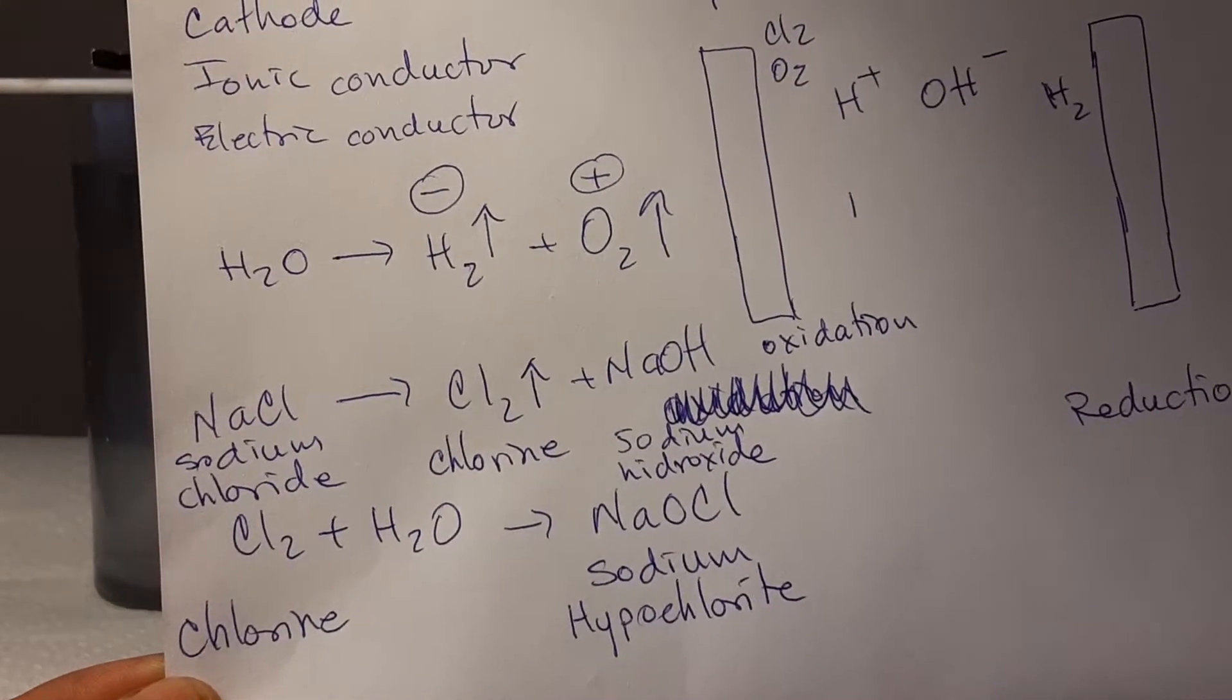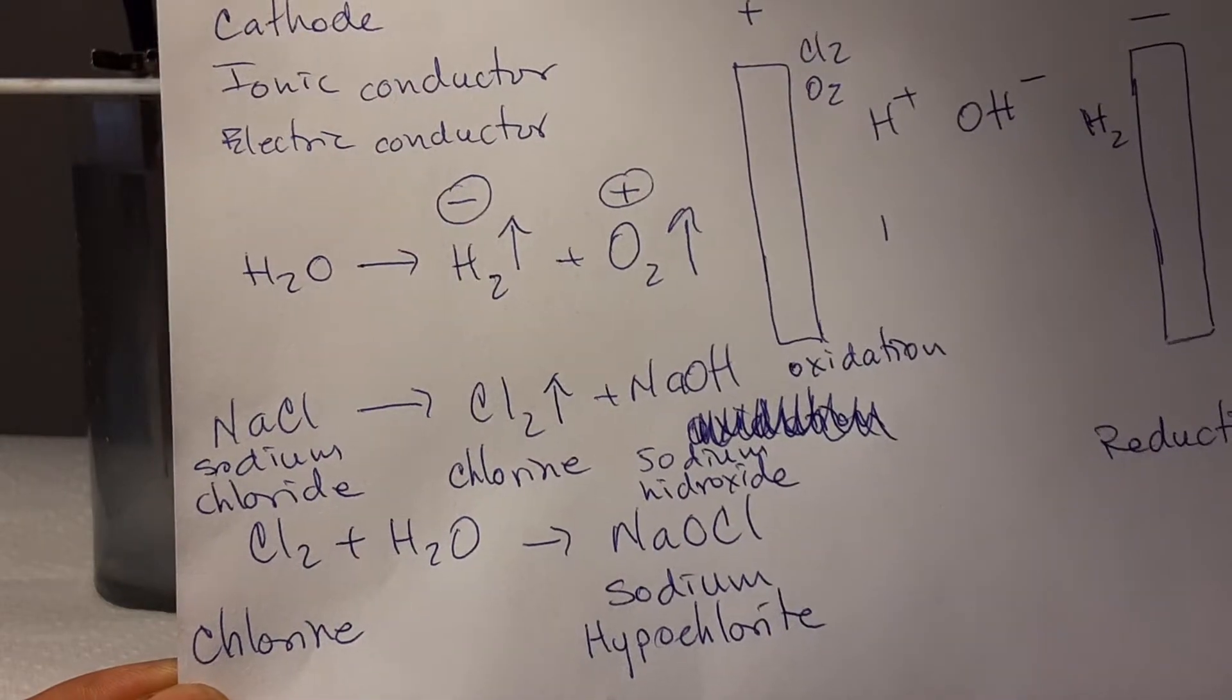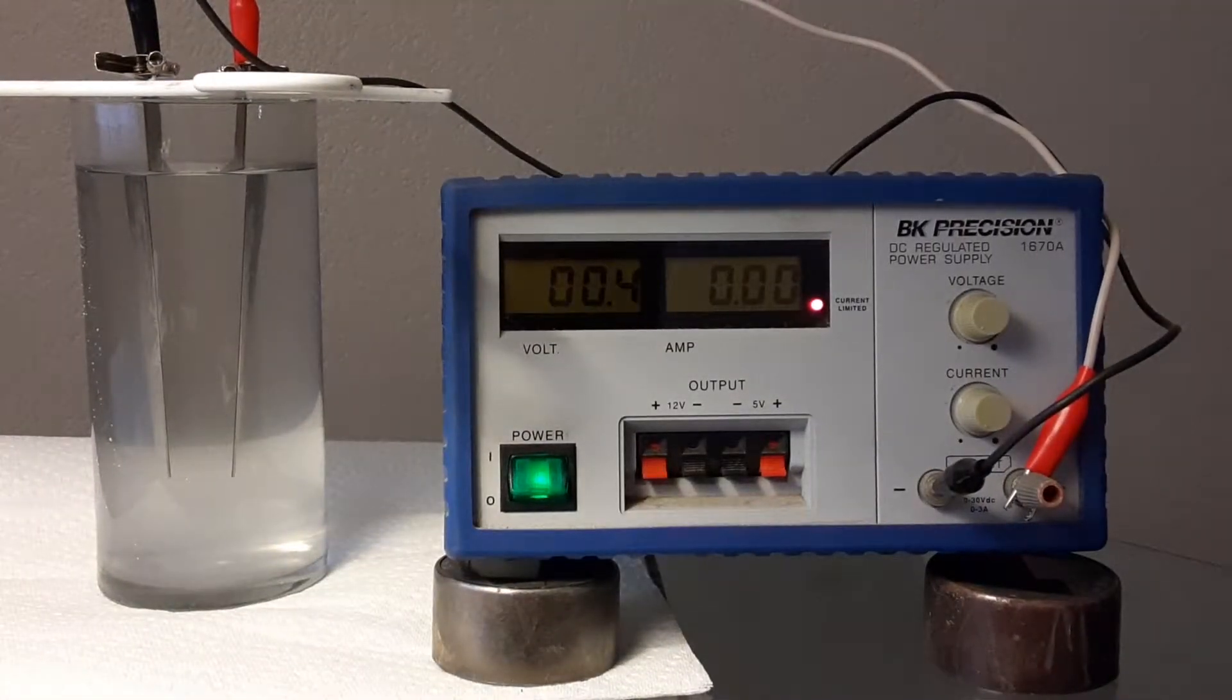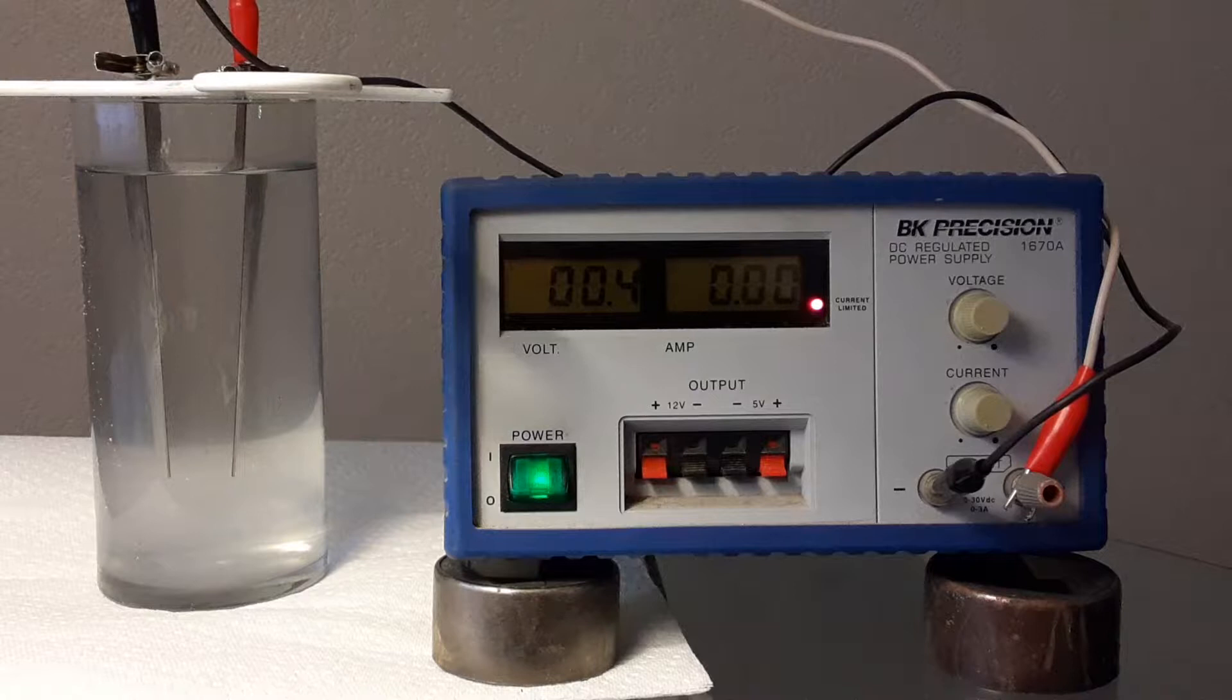Okay, we will start. We have our power supply - this converts the alternating current to direct current. We are working with direct current with a current controller, which means we control the voltage.